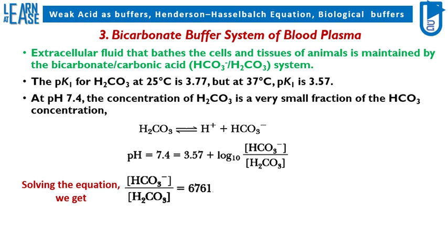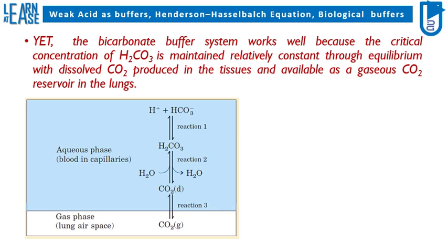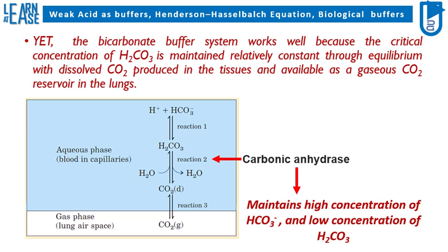Thus, the concentration of HCO3- has to be 6761 times higher than H2CO3 to maintain the pH of the blood. Yet the bicarbonate buffer system works well because the critical concentration of HCO3- is maintained relatively constant through equilibrium with dissolved CO2 produced in the tissues and available as gaseous CO2 in the lungs. The enzyme carbonic anhydrase maintains high concentration of HCO3- and low concentration of H2CO3 in intracellular fluids.